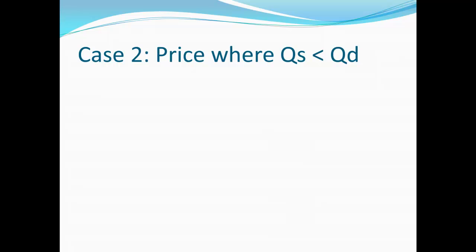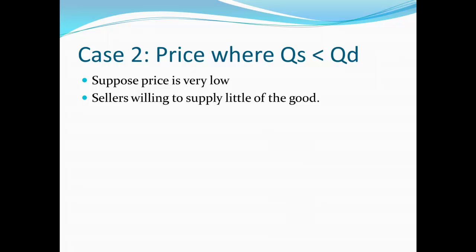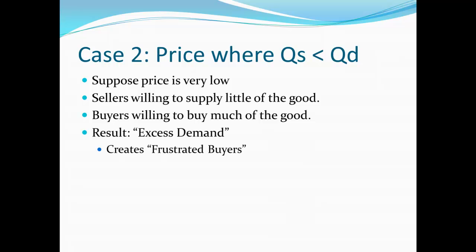Case 2 is just the opposite: the price is such that quantity supplied is less than quantity demanded. We know this would happen if the price is very low. If the price is very low, sellers don't really want to supply very much of the good and provide very little of it. While at the same time, if the price is very low, buyers would love to buy this good. The result is an excess of demand — people really want to buy this good in large quantities, while the quantities offered for sale are relatively small.